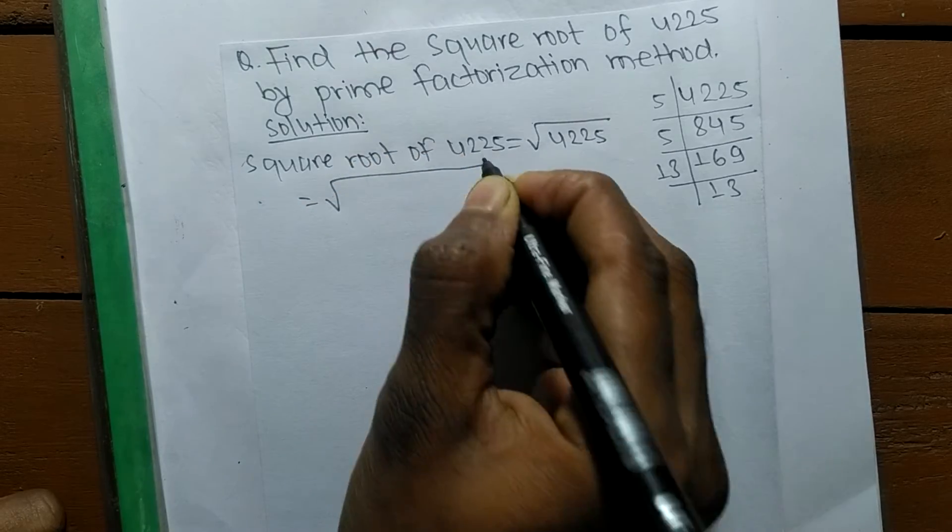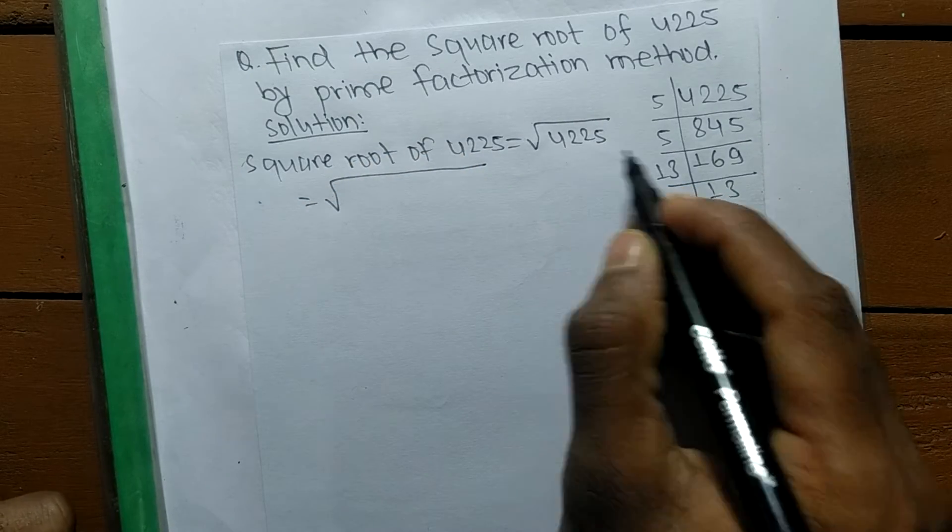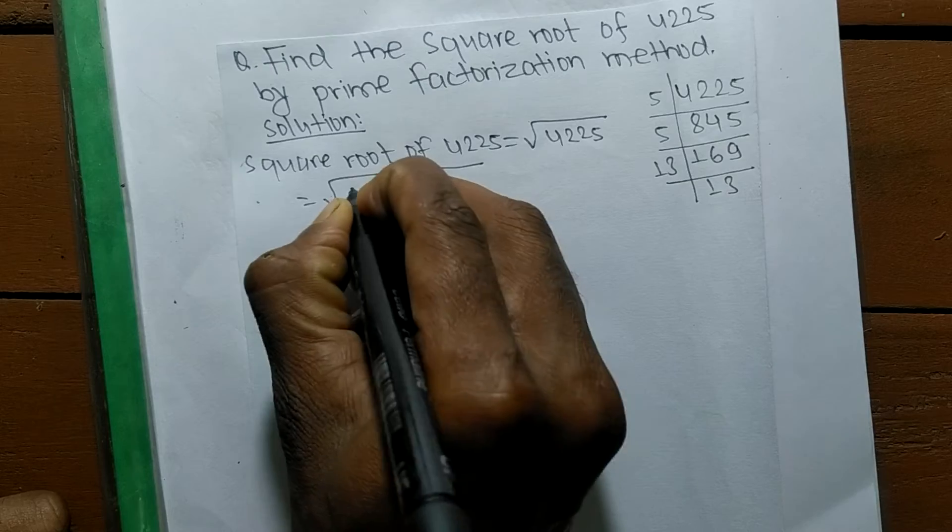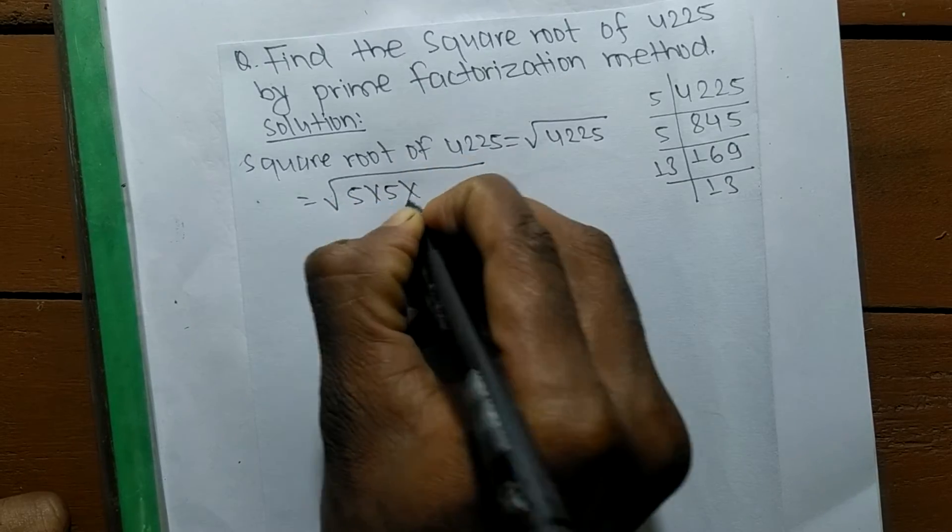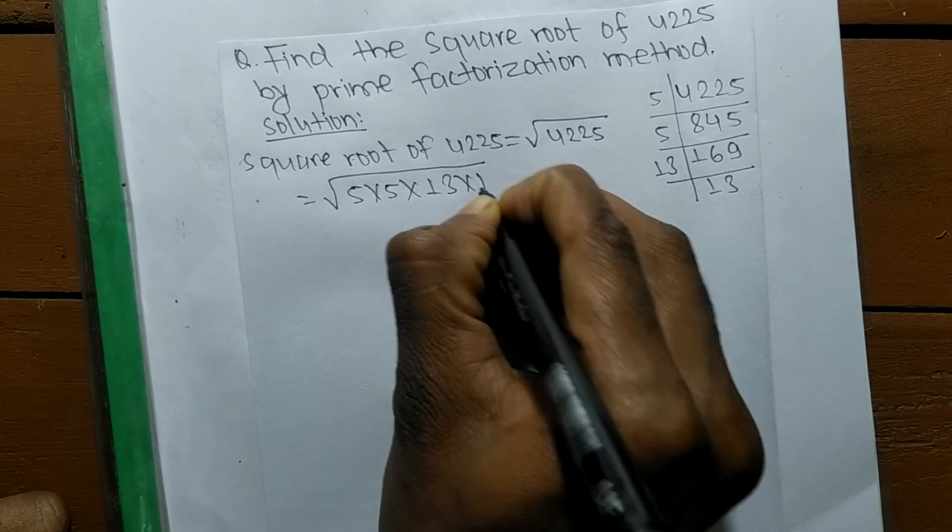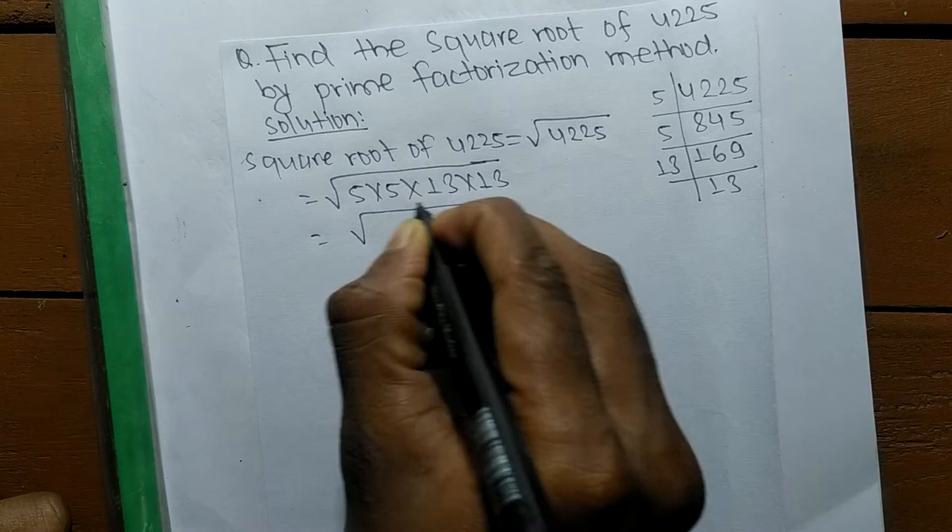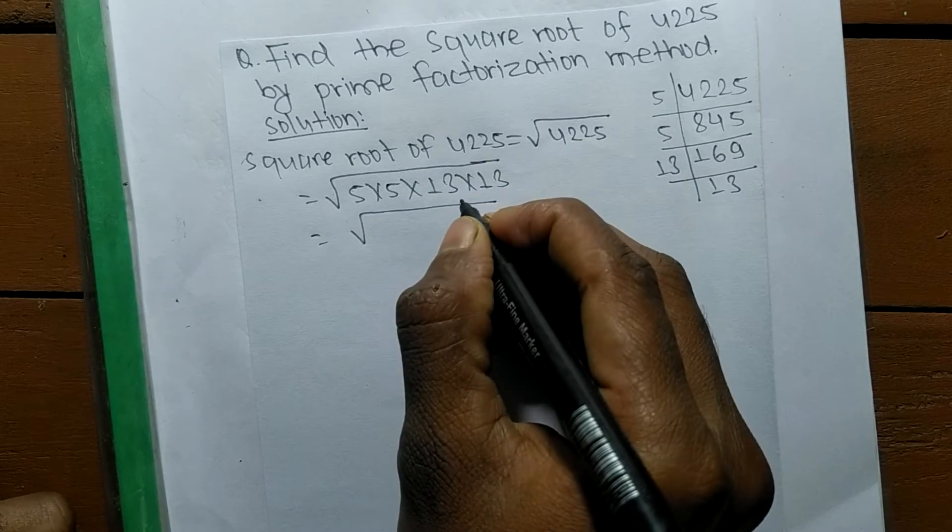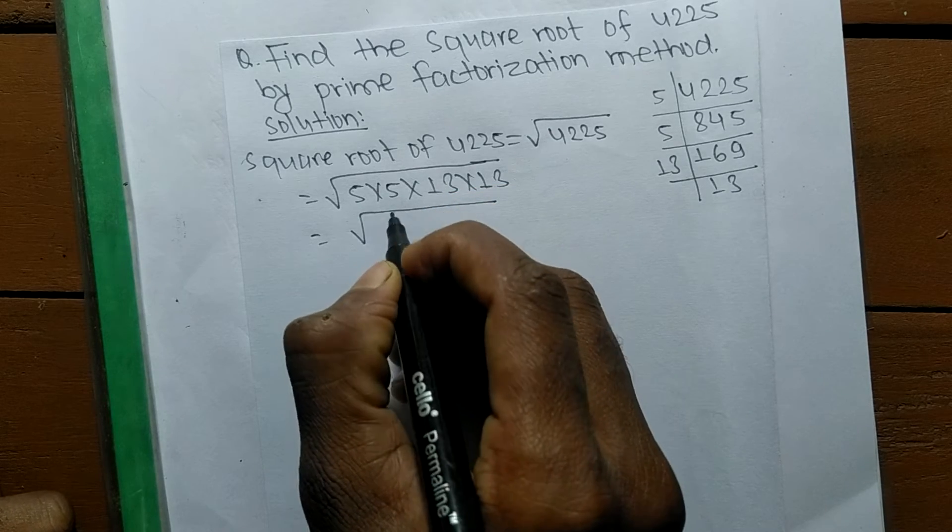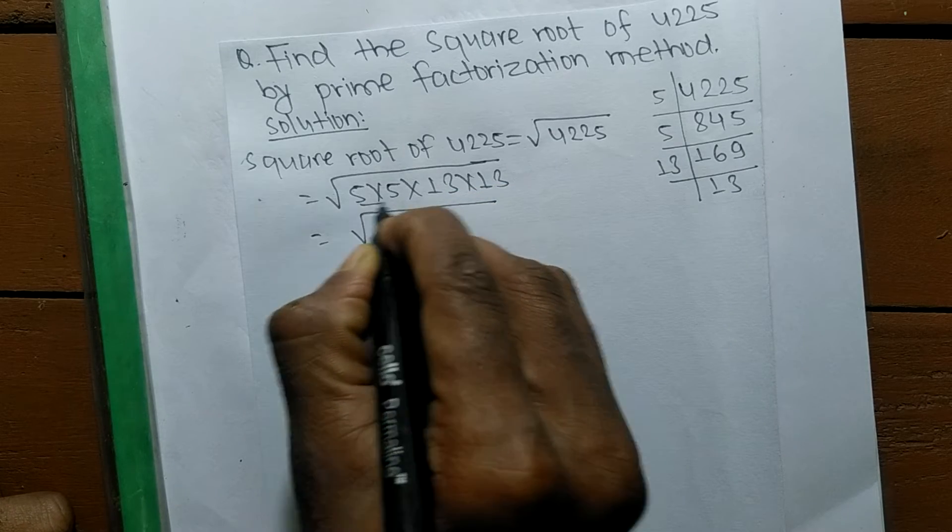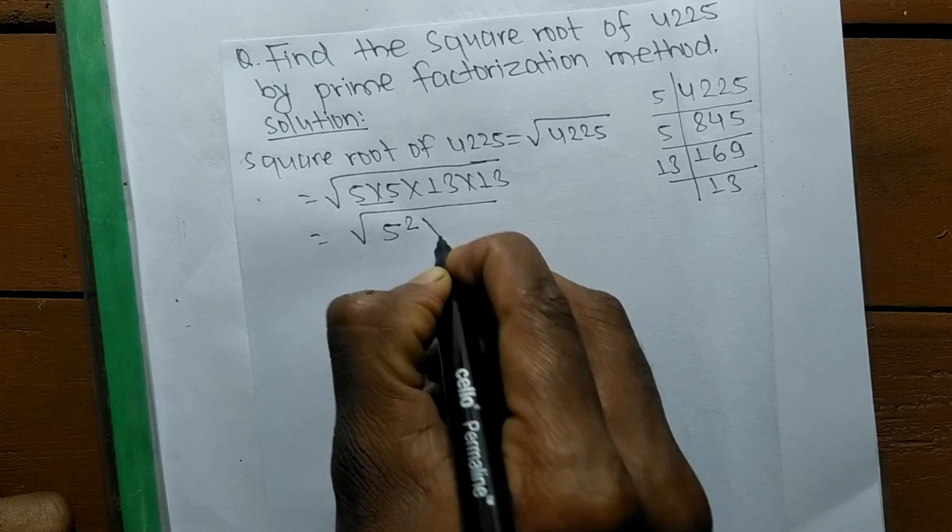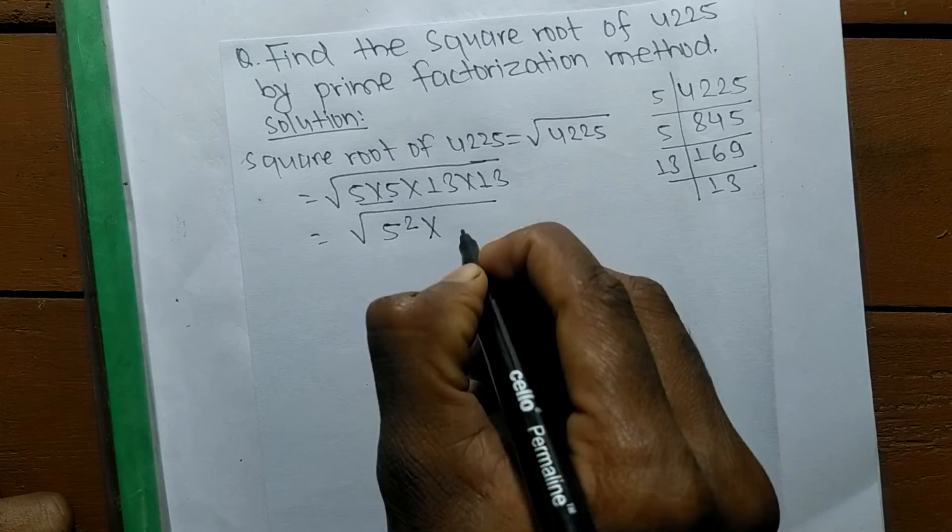Now we write the prime factors of 4,225. It is 5 times 5 times 13 times 13. As you know, we have written the prime factors and we have to make the square root of these prime factors.